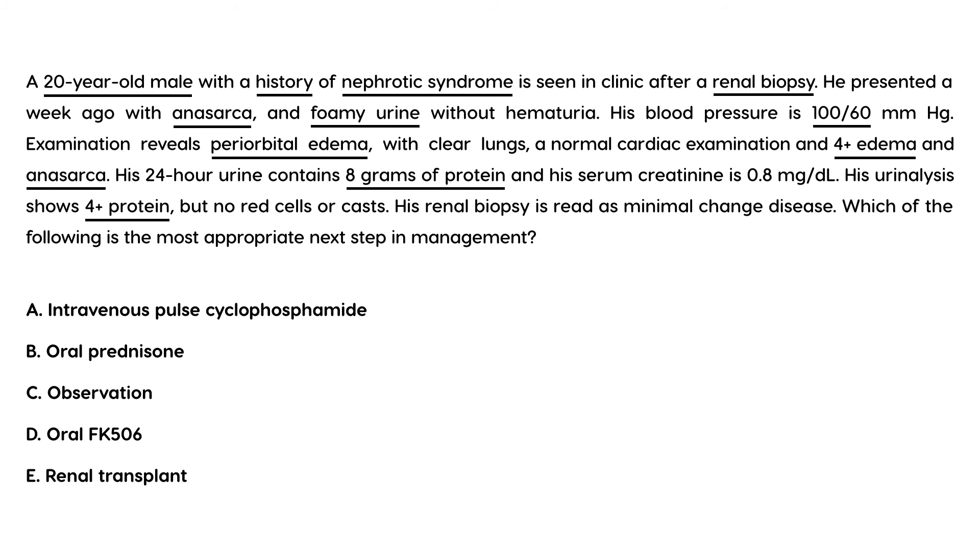Urinalysis shows four plus protein, no red cells or casts. His renal biopsy is read as minimal change disease. Which of the following is the most appropriate next step? Well, this question pretty much spells it all out and they're just asking for the treatment. And steroids is the treatment, so that would be prednisone.